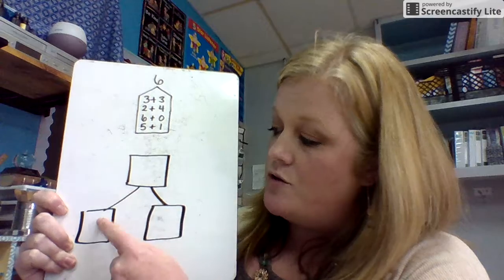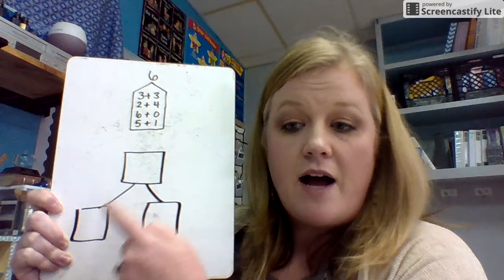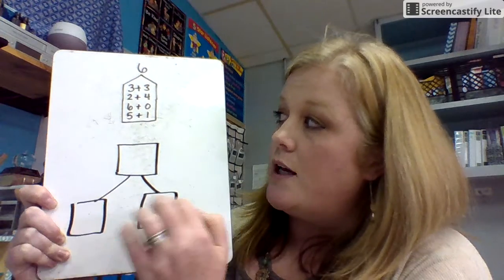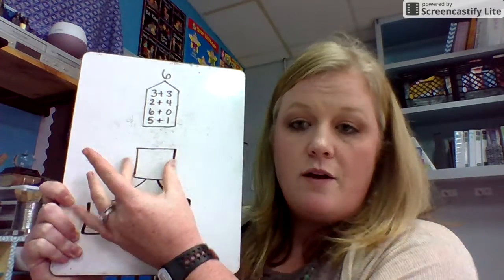So the whole would be six and the two parts would be five and one, or three and three, two and four. So it makes up the whole of six.